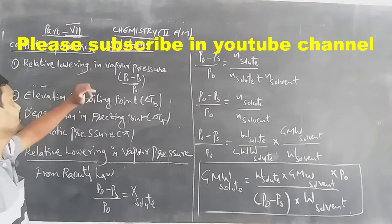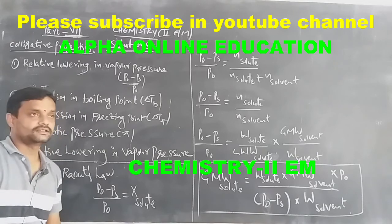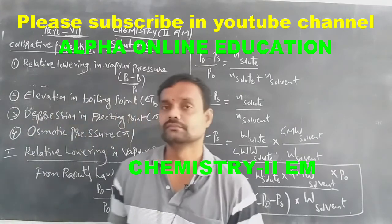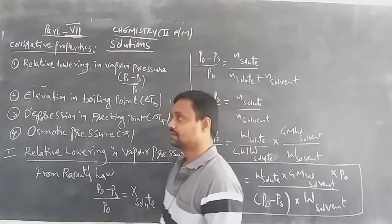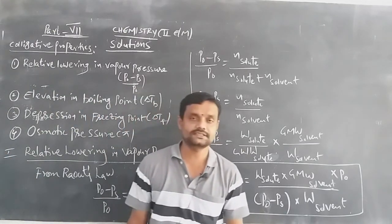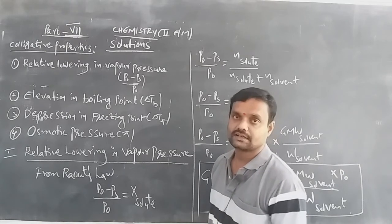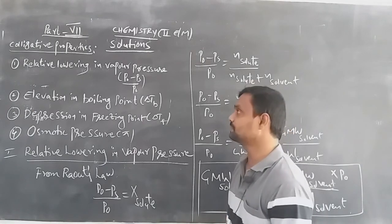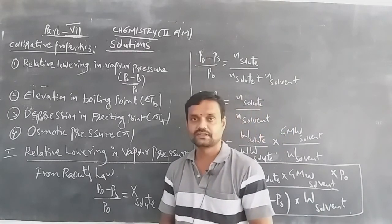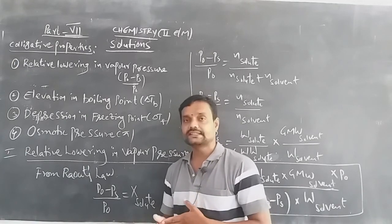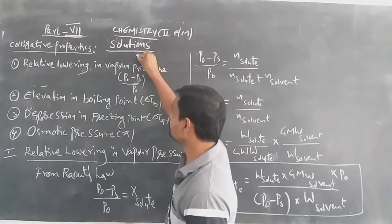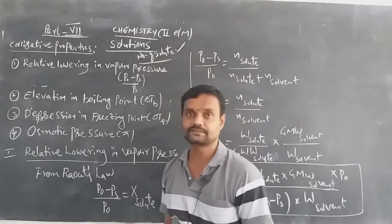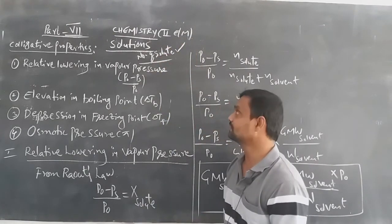In this session, we previously discussed up to part 6, so next we go to part 7. In part 7, our topic is colligative properties. The simple meaning of colligative properties: these are the properties which depend on the number of solute particles in the solution. That type of property is called colligative properties.